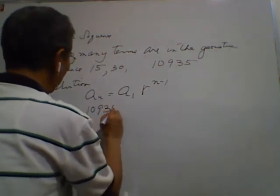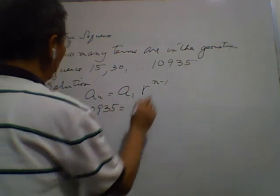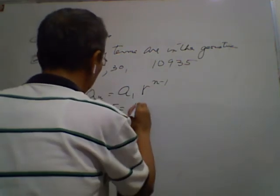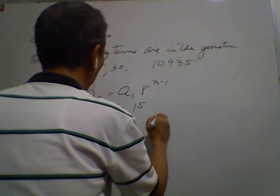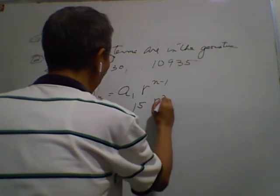Just substitute, direct substitution. a sub 1 is 15, and r to the power of n minus 1.